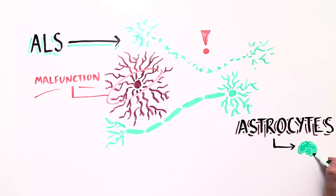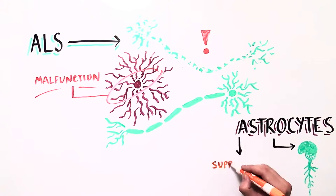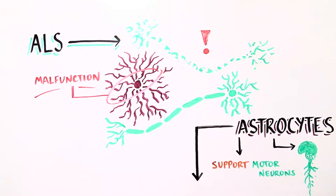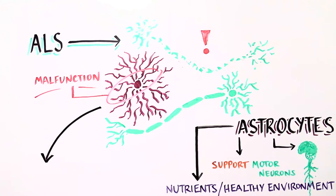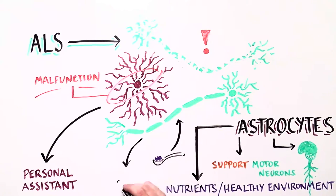Astrocytes are present in the brain and spinal cord where they support the motor neurons by providing nutrients and maintaining a healthy environment for them to reside. You can think of the astrocytes as the motor neurons' personal assistant.